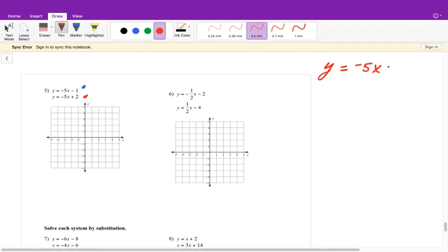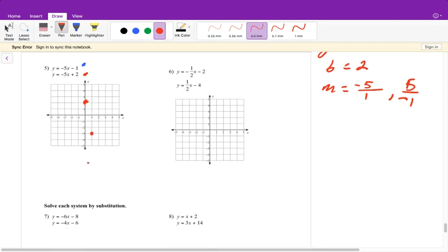So y equals negative 5x plus 2. Our b is 2. Our slope is negative 5 over 1, or we can write it as 5 over negative 1. So here's our point. If I try to go up 5 I'm off the graph, so I'll go down 1, 2, 3, 4, 5, and over 1 to the right. Once again, I'm going to try my best to use this straight edge on here. It can just be difficult at times because I can't see it like you can on a paper.